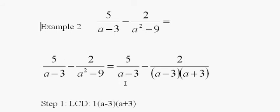I see that the coefficient in front of both of these is 1, so it would be 1 times a minus 3 times a plus 3, and the highest power that occurs is 1. So there's our lowest common denominator.